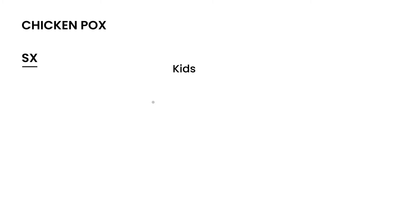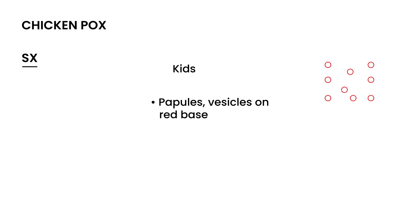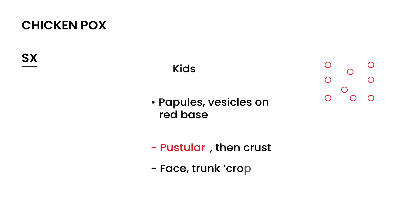Chickenpox most often happens in kids. It is described as papules or vesicles on red bases, and they appear in crops. Later they can become pustular and then crust over. The lesions often appear on the face or the trunk and tend to come in crops.